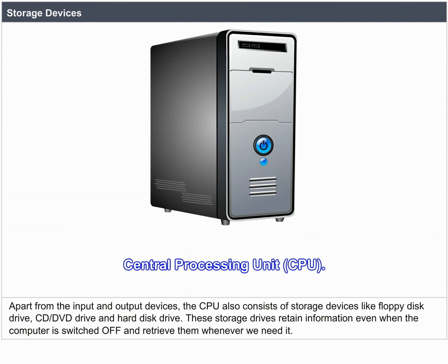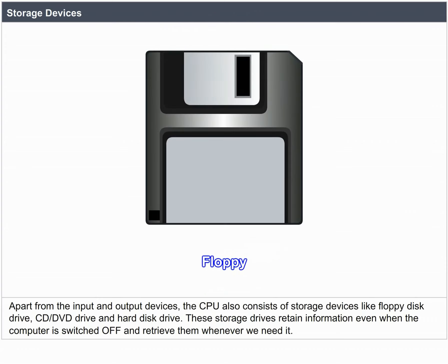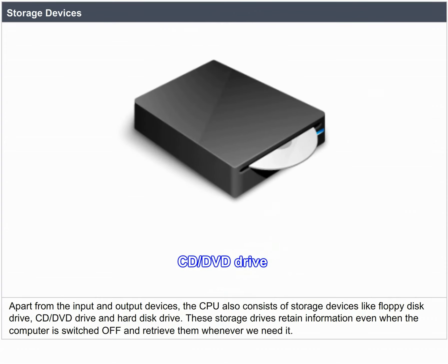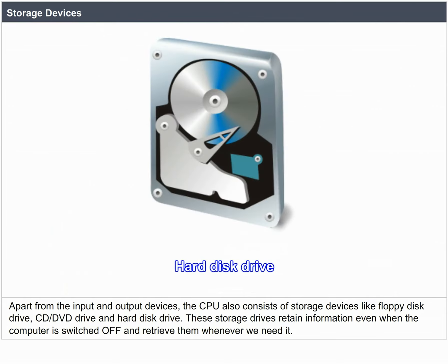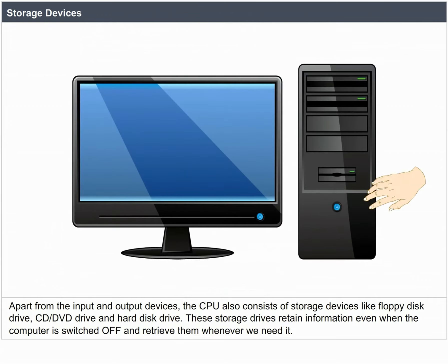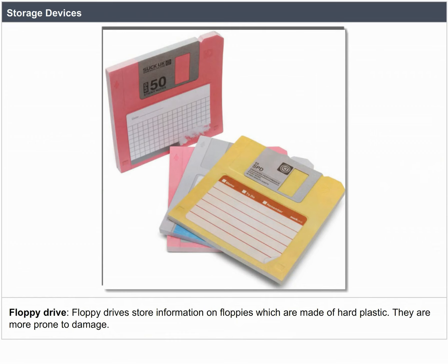Storage Devices. Apart from input and output devices, the CPU also consists of storage devices like floppy disk drive, CD/DVD drive, and hard disk drive. These storage drives retain information even when the computer is switched off and retrieve it whenever needed. Floppy drives store information on floppies made of hard plastic, but they are more prone to damage.